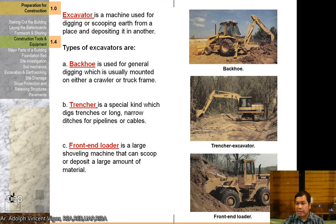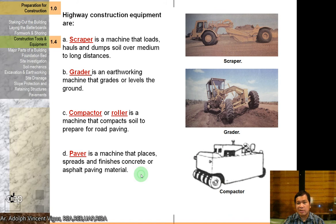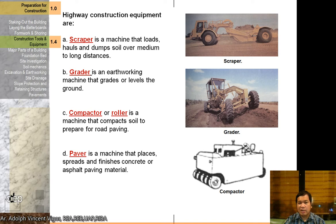A trencher is machinery that digs trenches or long narrow ditches for pipelines and cables. A front-end loader is a large shoveling machine that can scoop or deposit a large amount of material. For highway construction equipment: a scraper loads and dumps soil over medium to long distances; a grader levels the ground; a compactor or roller prepares road surface for paving; and a paver spreads and finishes concrete paving material.